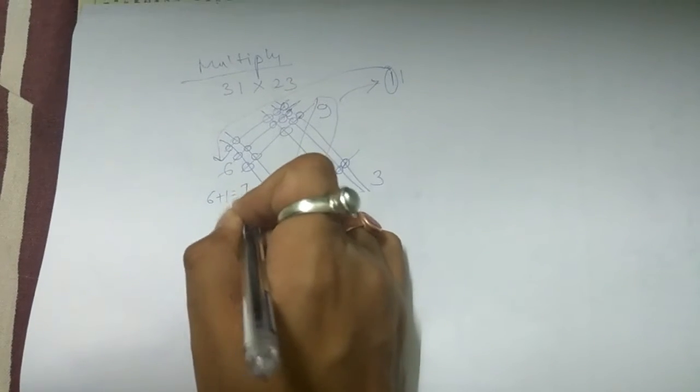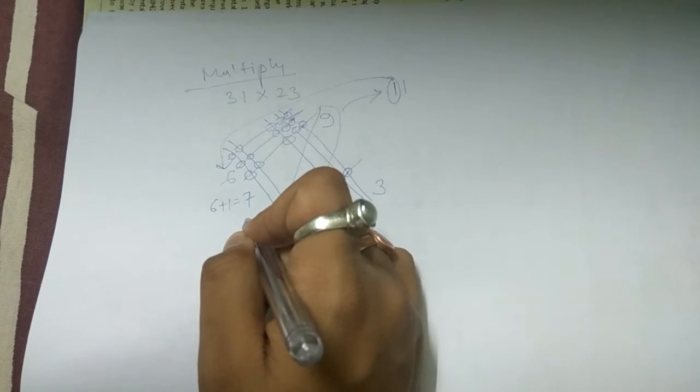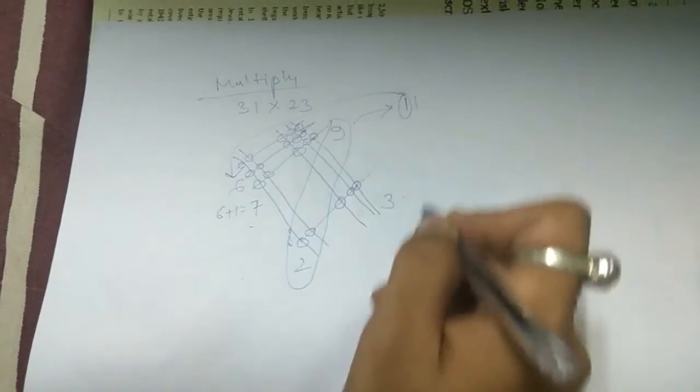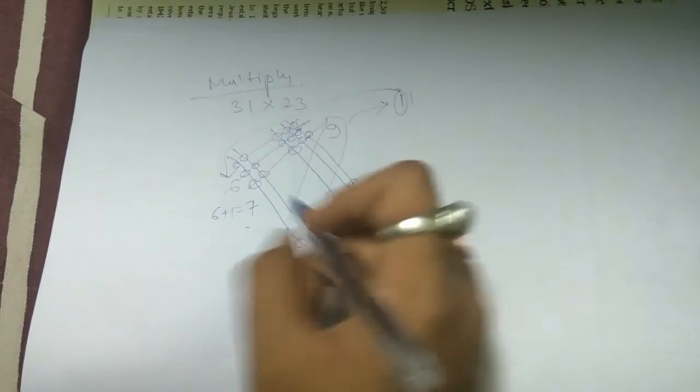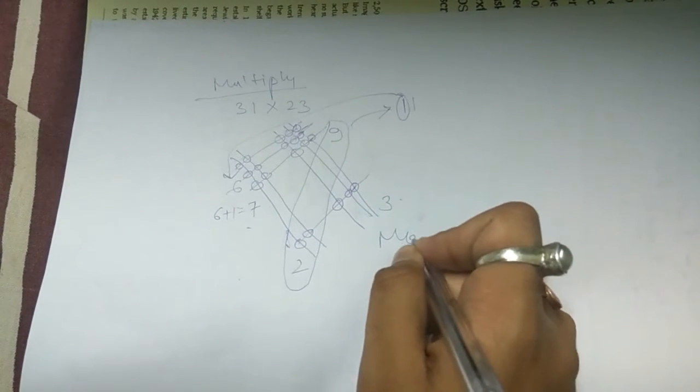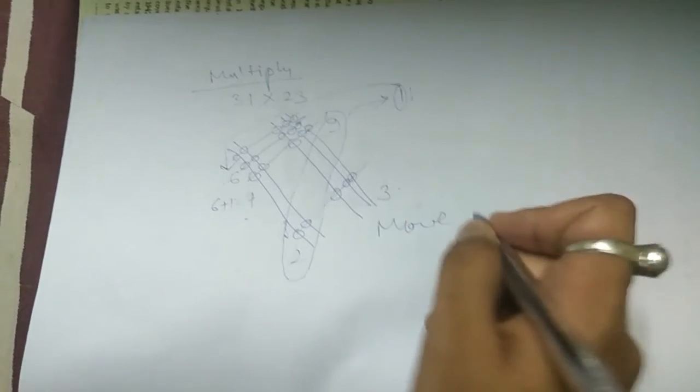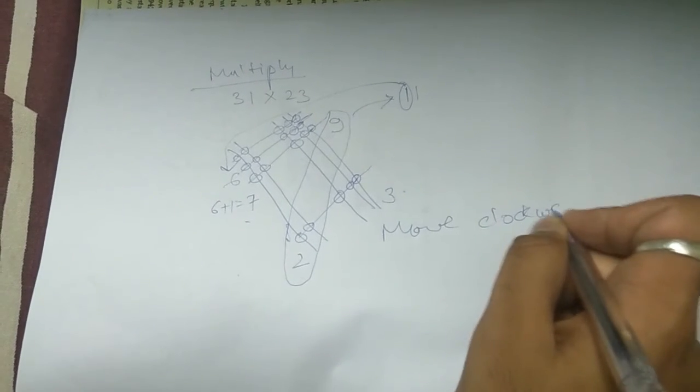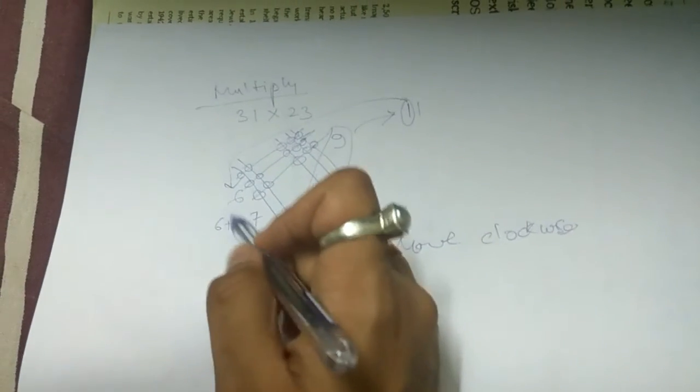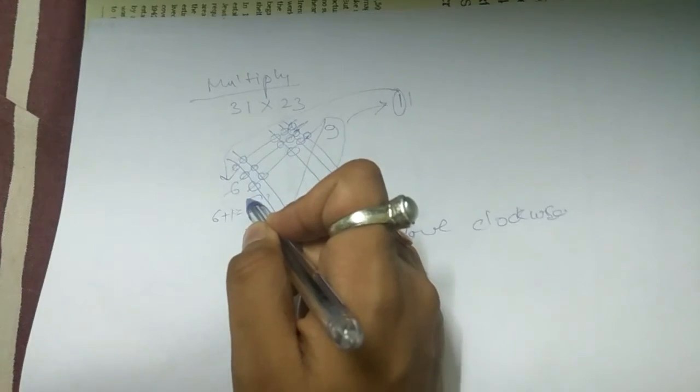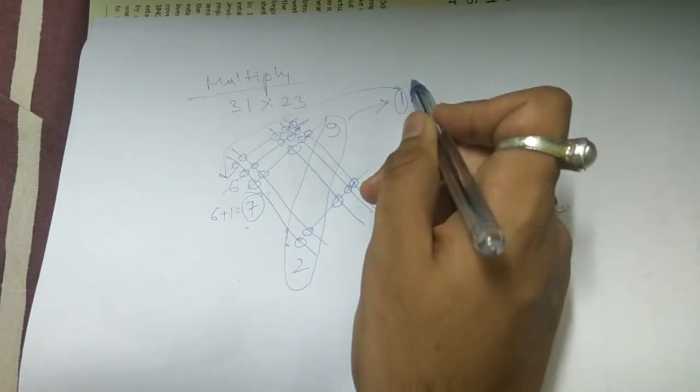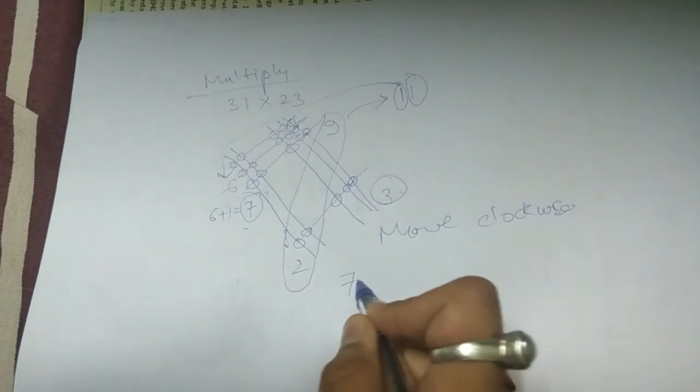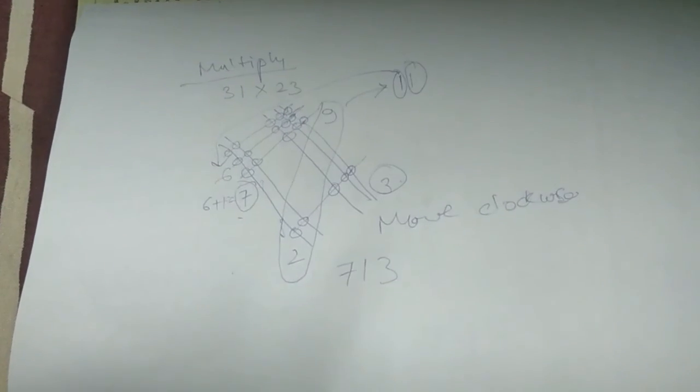This will be what? 6 plus 1, that will be equal to 7. Now we have to move from this 7 to this 3 in a clockwise direction. Move clockwise: what do we get? 7, 1, 3. So your answer will be 713. Thank you.